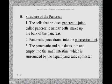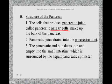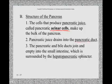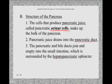The cells inside the pancreas that produce pancreatic juice are called acinar cells, which make up the bulk of the pancreas. The majority of pancreatic cells are acinar cells dedicated to making pancreatic juice. Only a small portion of the pancreas contains cells producing insulin. The acinar cells secrete pancreatic juice into the pancreatic duct, which joins the bile duct and empties into the small intestine at the hepatopancreatic sphincter.